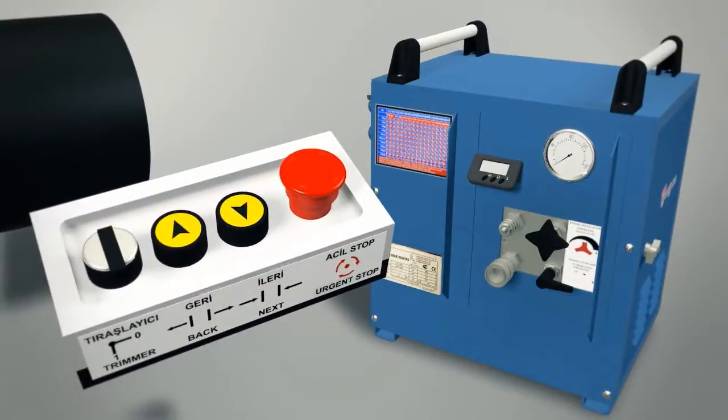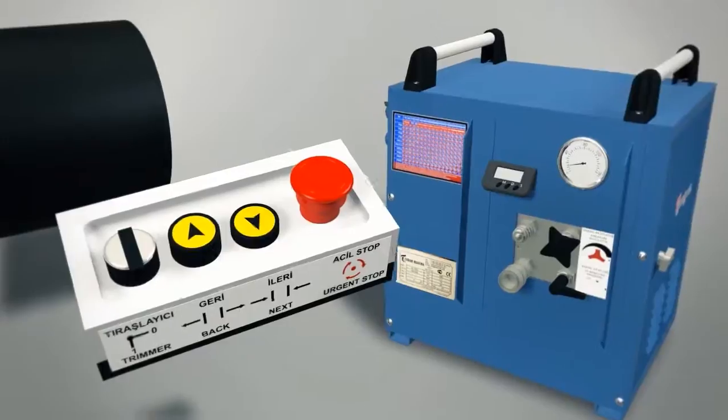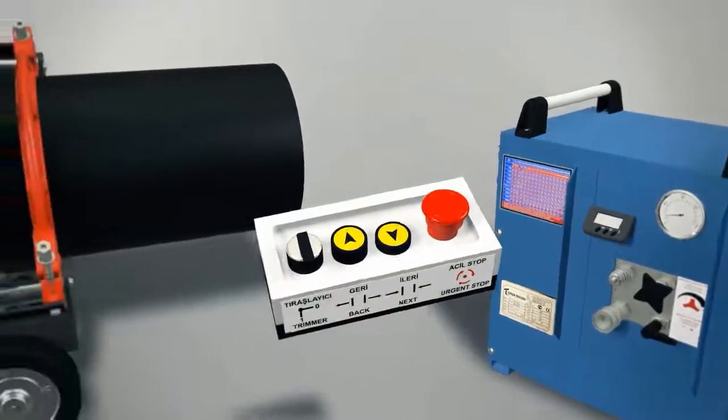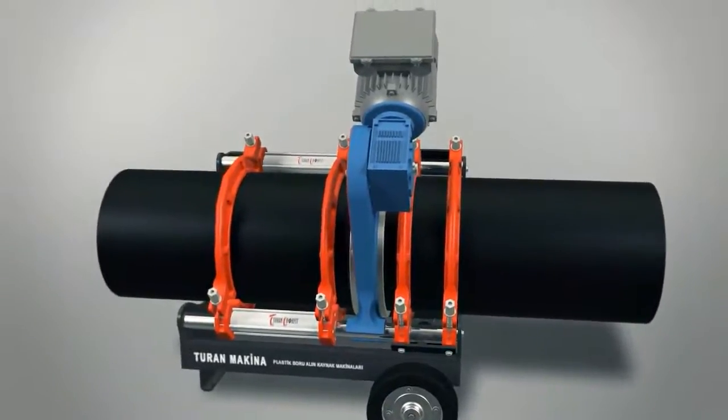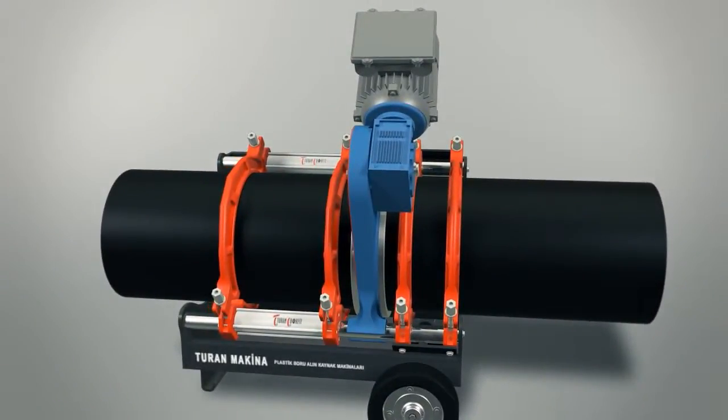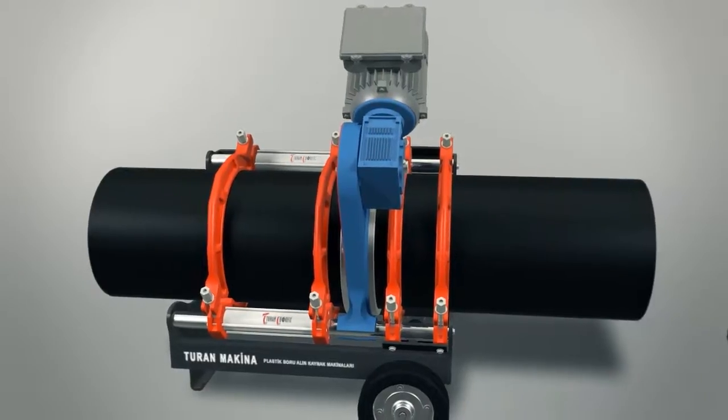During this time, increase the pressure gradually. When machine starts to pull the pipes, look at manometer. Pressure you read on manometer is the walking pressure of machine. Make trimming by adding 5 or 10 bars to this pressure.